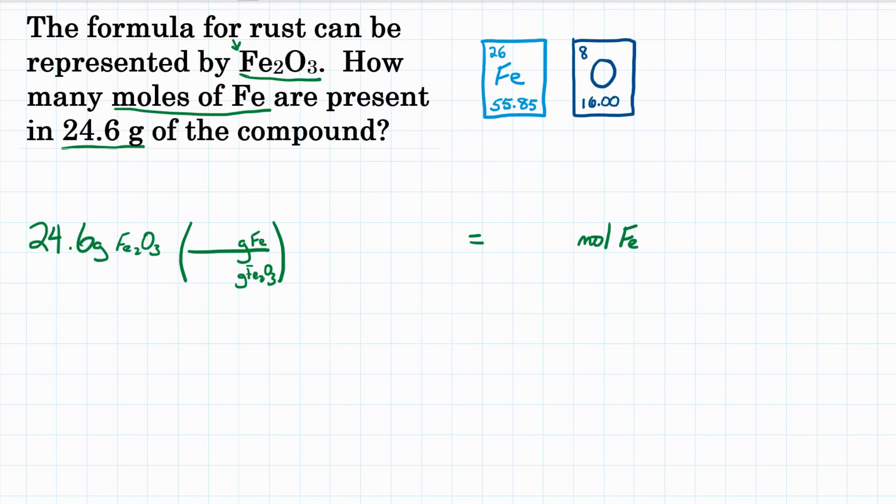We need to look at the percent composition of Fe2O3. If we had a mole of rust, for iron that would be two moles of iron because there's a little two there, and for oxygen we'd have three because of the three right there. So we multiply those by the molar masses of these individual elements. For iron it's going to be 55.85, and for oxygen 16.00.